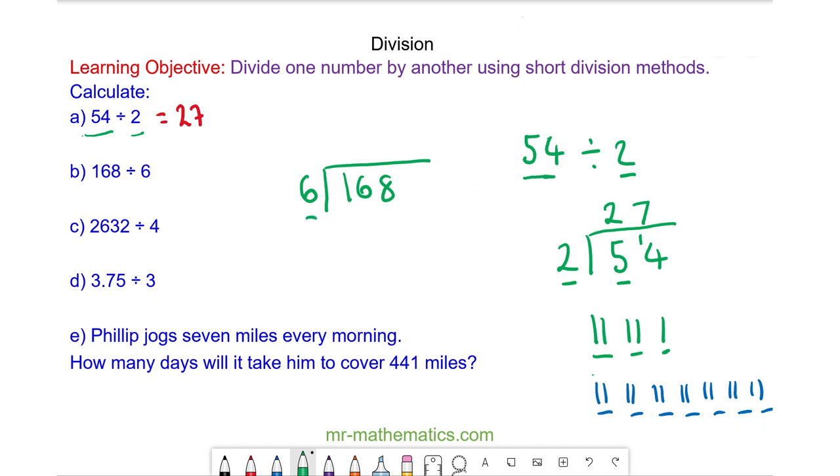And we have 6s into 1. There are 0 6s in 1, so we carry this 1 over. So now we have 6s into 16.